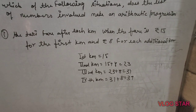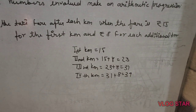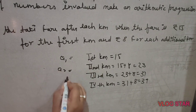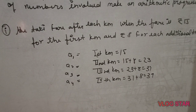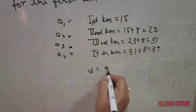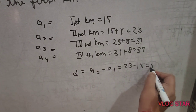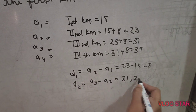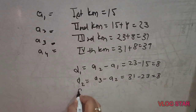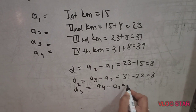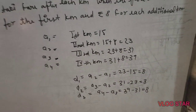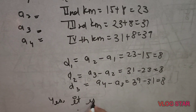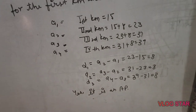So we have A1 = 15, A2 = 23, A3 = 31, A4 = 39. Checking differences: A2 − A1 = 23 − 15 = 8. A3 − A2 = 31 − 23 = 8. A4 − A3 = 39 − 31 = 8. You can see that the common difference is 8 throughout, so Yes, it is an AP.